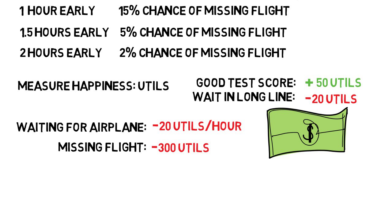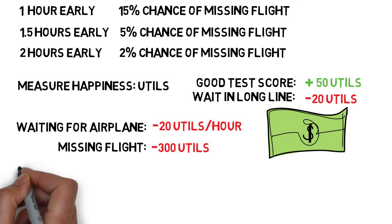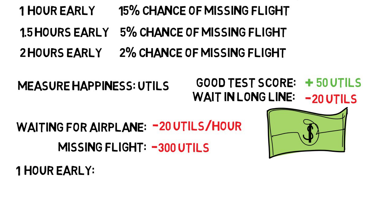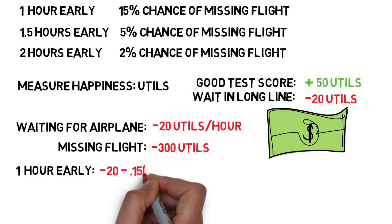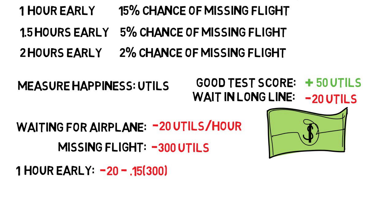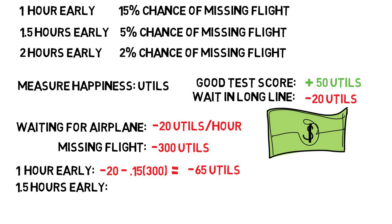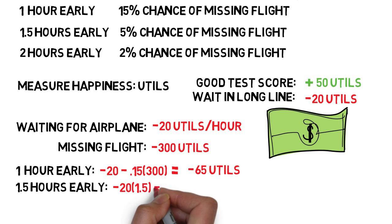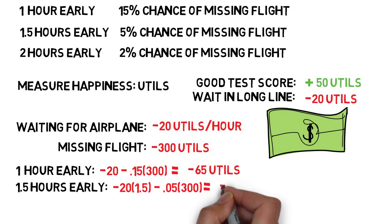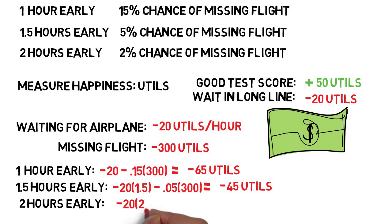We can calculate the expected loss in happiness for each scenario. If we arrive one hour early, we lose 20 utils for that one hour, minus a 15% chance of losing 300 utils — a net outcome of losing 65 utils. That's the average loss if we arrived an hour early for 100 flights. If we arrive 1.5 hours early, that's negative 20 utils times 1.5 hours of waiting, then with only a 5% chance of missing our flight, we multiply by 300 and get minus 45 utils. Arriving 2 hours early gives an output of minus 46.